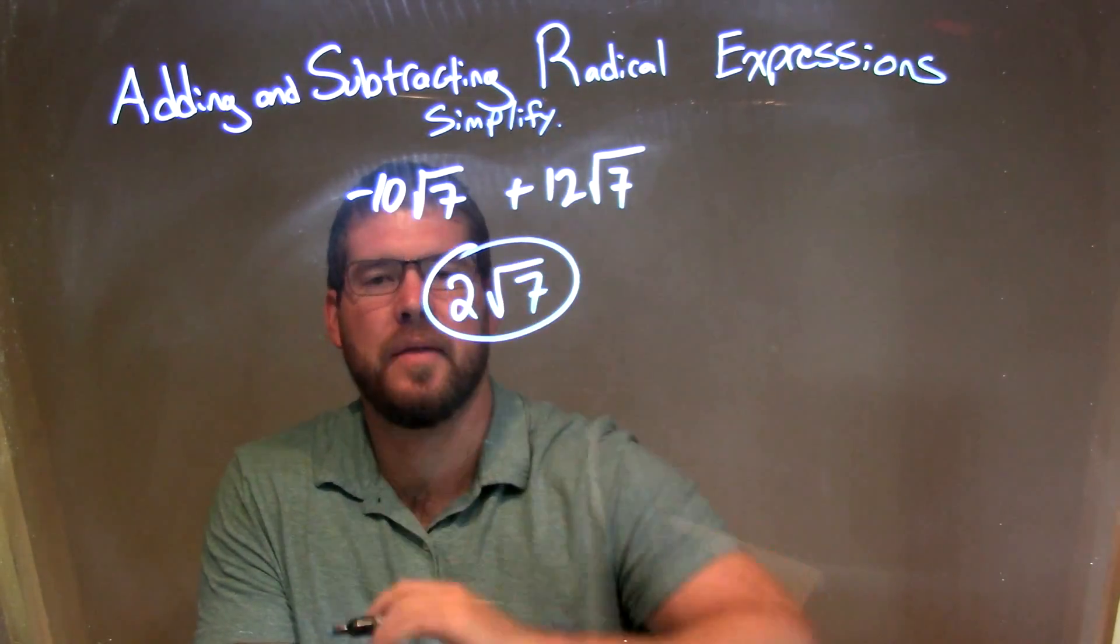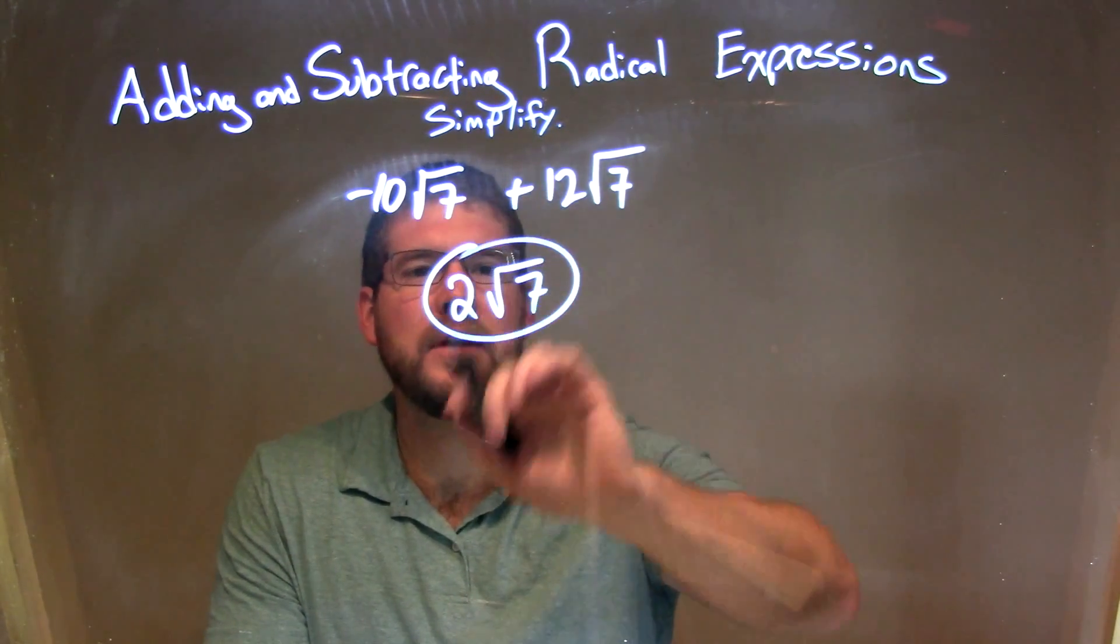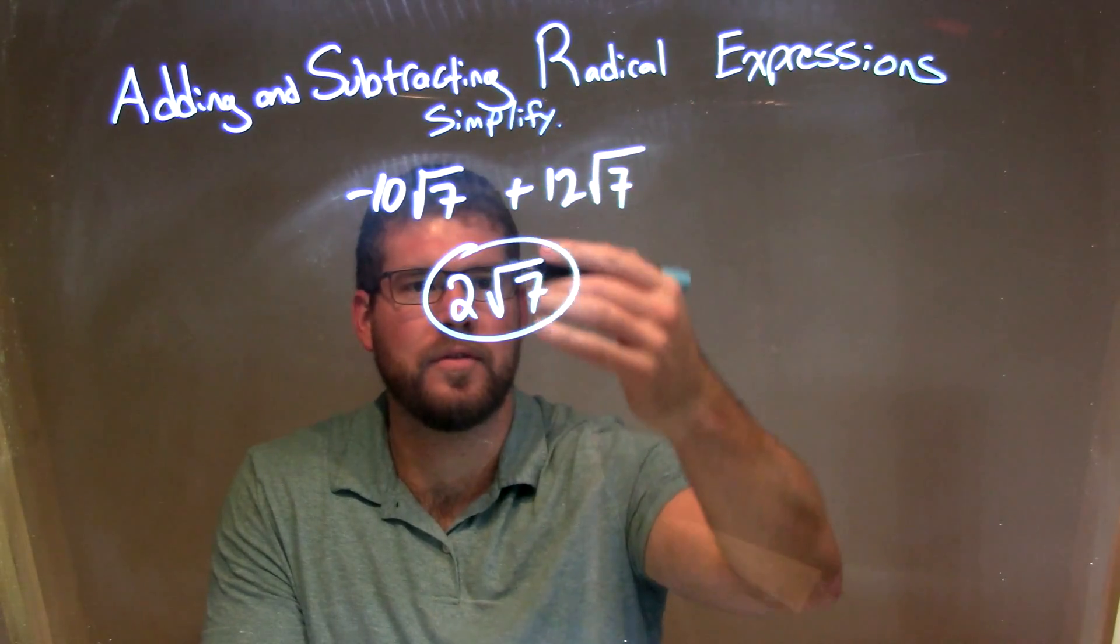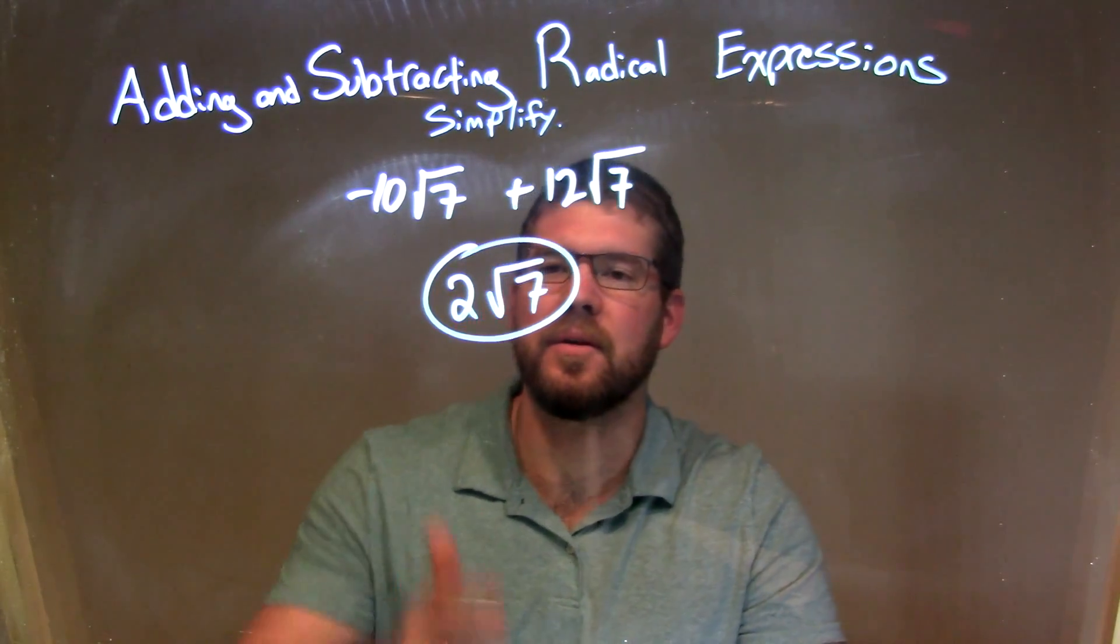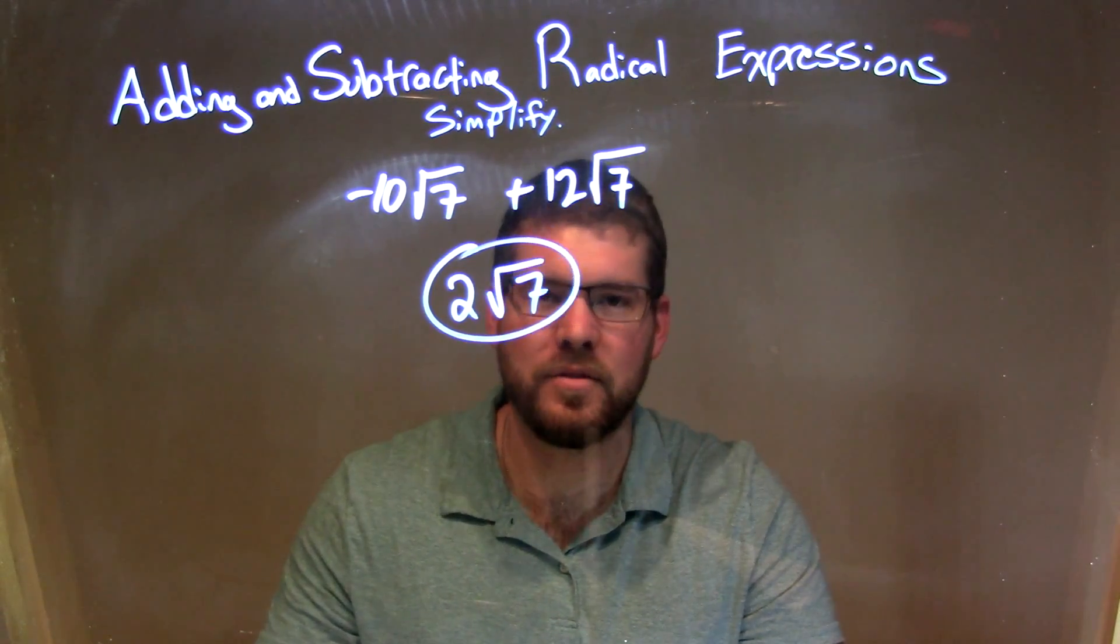which is a negative 10 and the 12. When we add those together, we get 2. We bring in the square root of 7 right there. And so again, our final answer here is just 2 times the square root of 7.